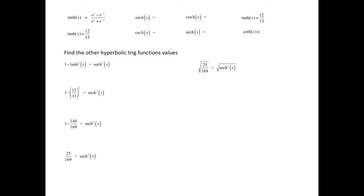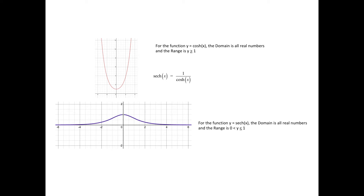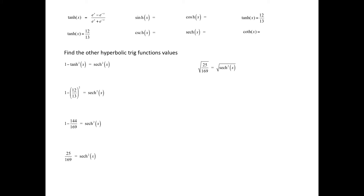Now, applying the square root to both sides, note that no plus or minus is applied. The graph of the hyperbolic cosine function shows that for y equals hyperbolic cosine of x, the domain is all real numbers and the range is y greater than or equal to 1. The hyperbolic secant of x is the reciprocal of the hyperbolic cosine of x, so its range is 0 to 1, including 1. These values are all positive, so it is not necessary to apply plus or minus to the radical. Therefore, the hyperbolic secant value is 5 thirteenths.